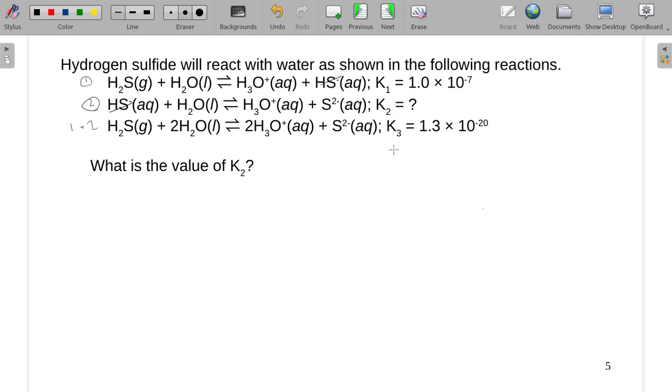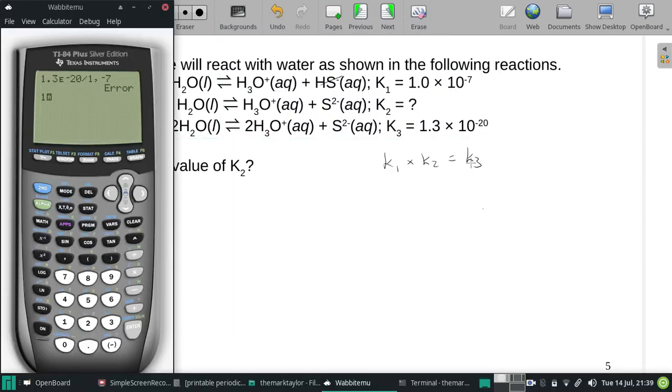So since we have that situation going on, we have a situation where K₁ times K₂ would be equal to K₃. So we're gonna just use that to figure out what our missing one is.